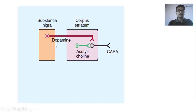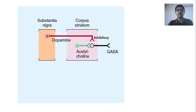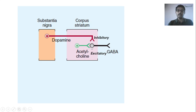There are two switches. The first switch is the nigrostriatal pathway — dopaminergic neurons from the substantia nigra to the corpus striatum. The second switch is acetylcholine — cholinergic neurons within the corpus striatum, with no projection from substantia nigra. The net effect of dopaminergic activation is inhibitory, leading to inhibition of inhibition and ultimately activation. The net effect of acetylcholine is excitatory — these neurons are activated, resulting in more GABA, which ultimately leads to inhibition.